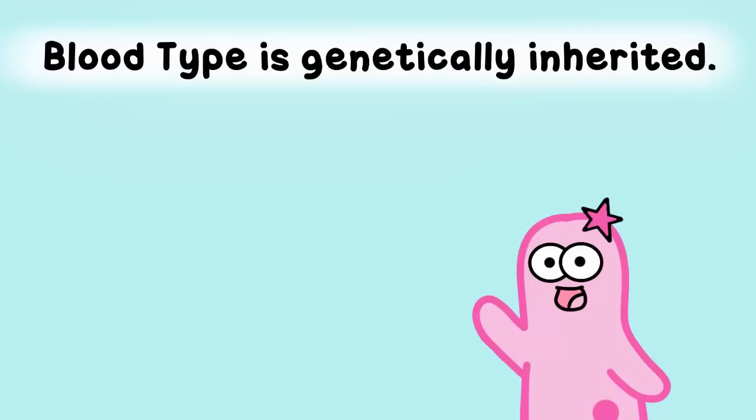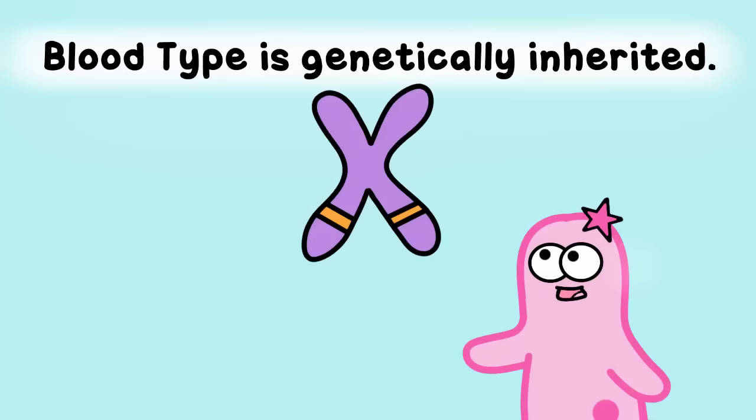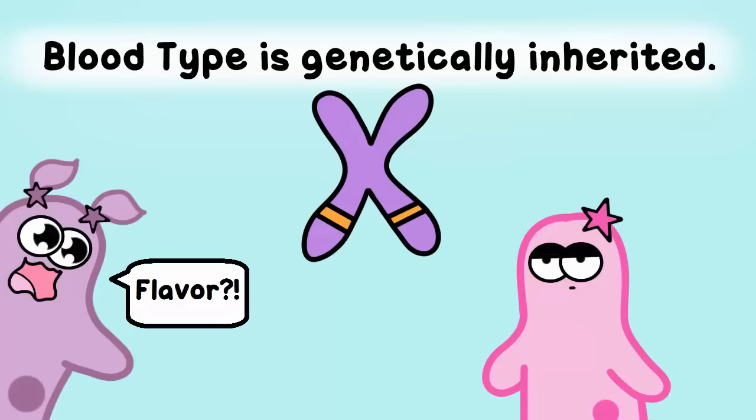Blood type is genetically inherited and is a great example of multiple alleles. Remember that alleles are a form of a gene - like a flavor, just as an analogy. So let's put this into practice.